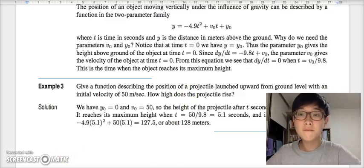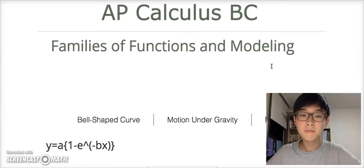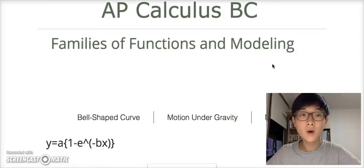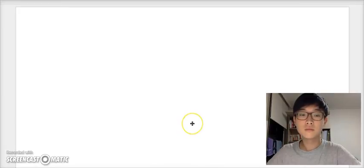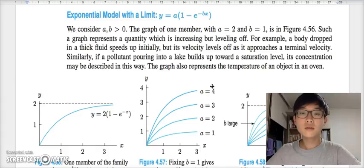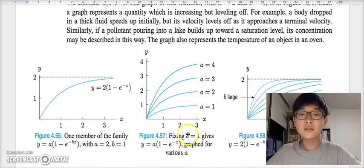Let's move on to our third family of functions, which is exponential model with a limit. This is normally used to describe a quantity which is increasing but is also leveling off, which could be exemplified by temperature level or saturation level of pollution in a lake. Let's vary the value of a and b to figure out what exactly are the roles of these two parameters.